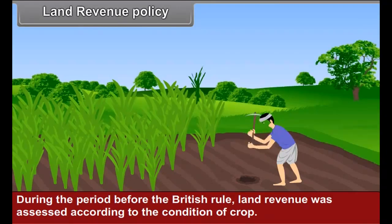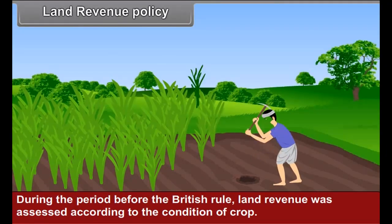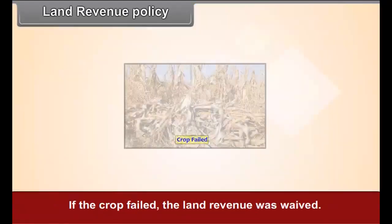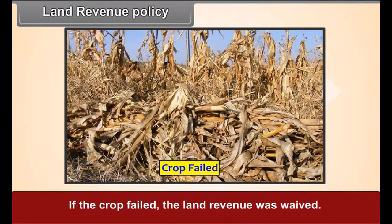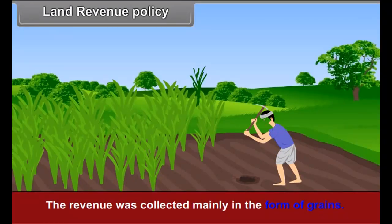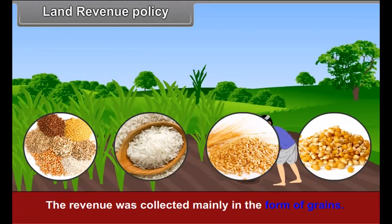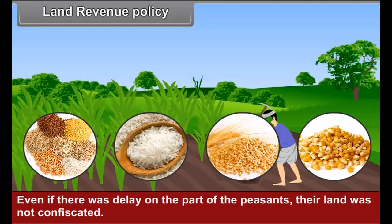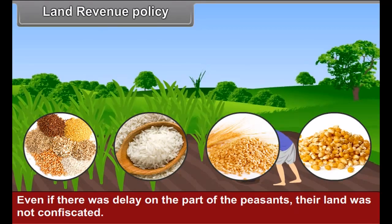During the period before the British rule, land revenue was assessed according to the condition of crop. If the crop failed, the land revenue was waived. The revenue was collected mainly in the form of grains. Even if there was a delay on the part of the peasants, their land was not confiscated.